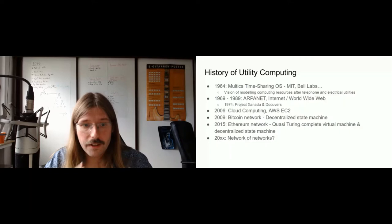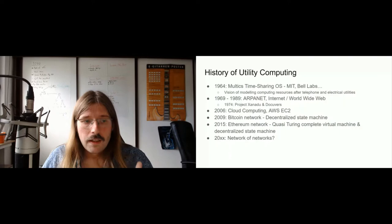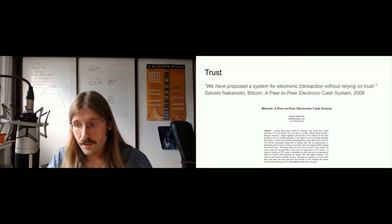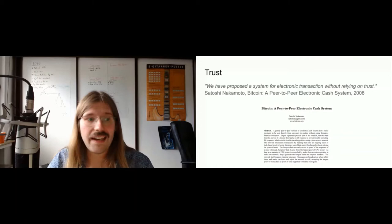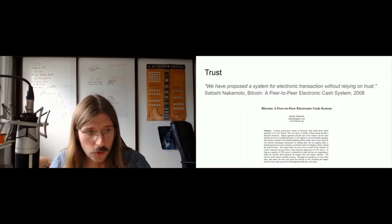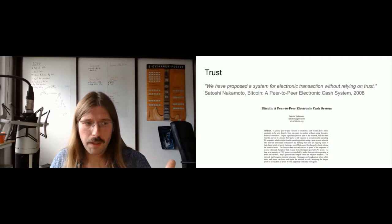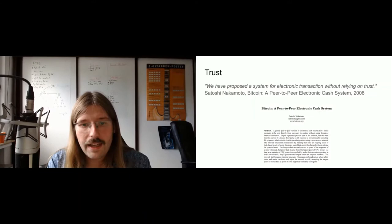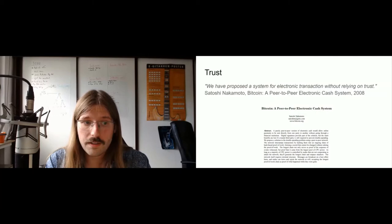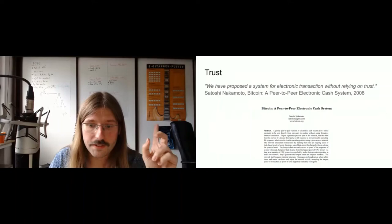What might be next is a network of networks — that's where the blockchain community is moving. One of the core ideas behind blockchain is adding a new form of trust. The original Bitcoin paper from 2008 by the pseudonymous Satoshi Nakamoto — no one actually knows who Satoshi is — was published on a cryptographic mailing list, proposing a peer-to-peer electronic cash system. It says: 'we have proposed a system for electronic transactions without relying on trust.' I would challenge this assumption.